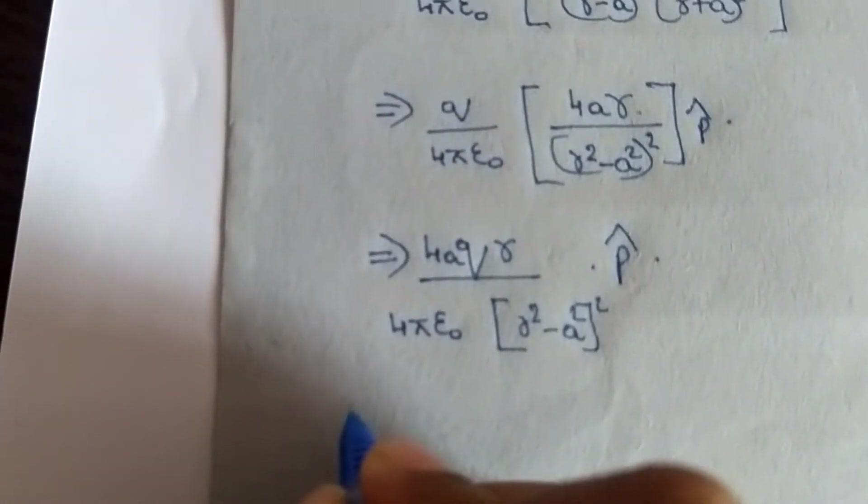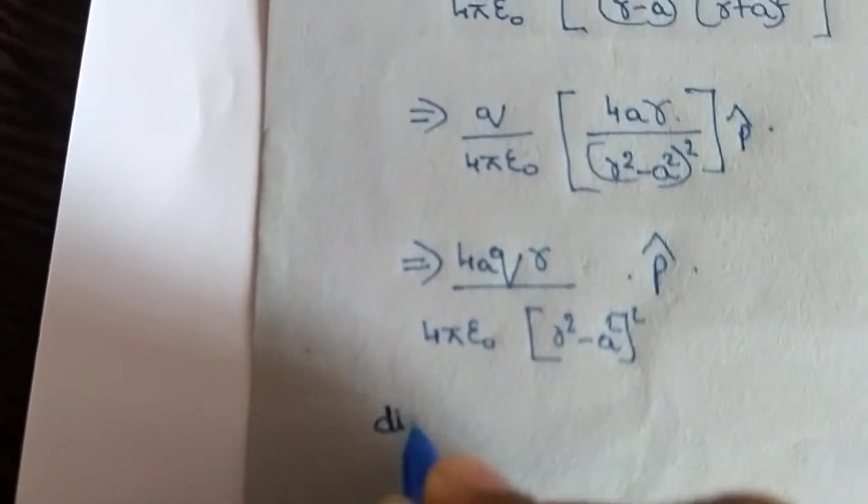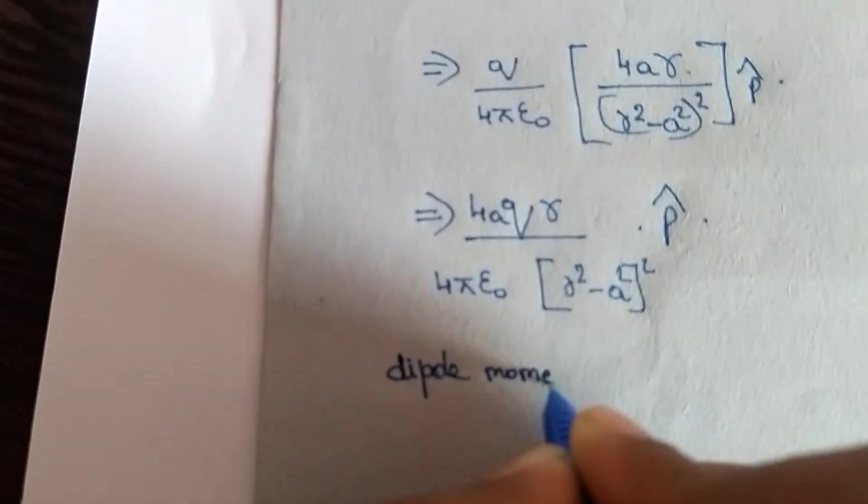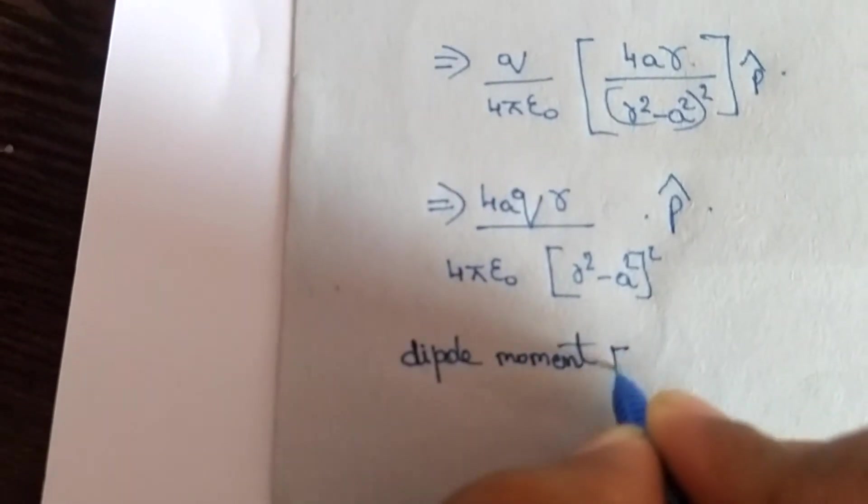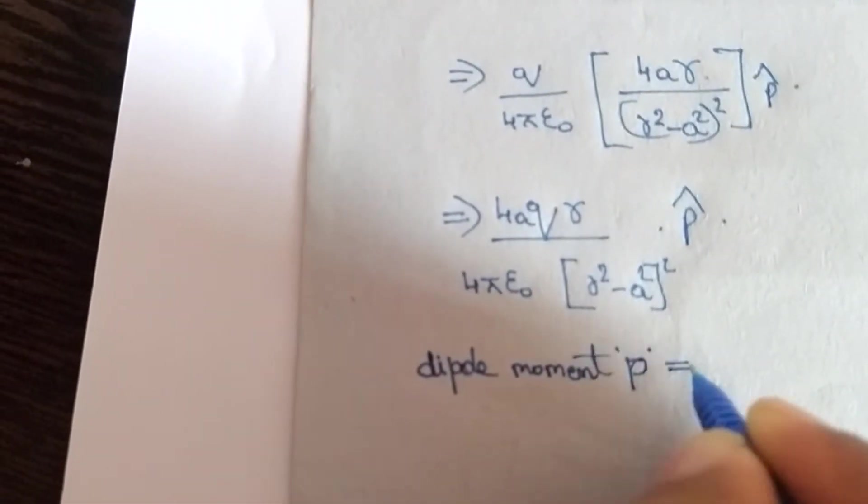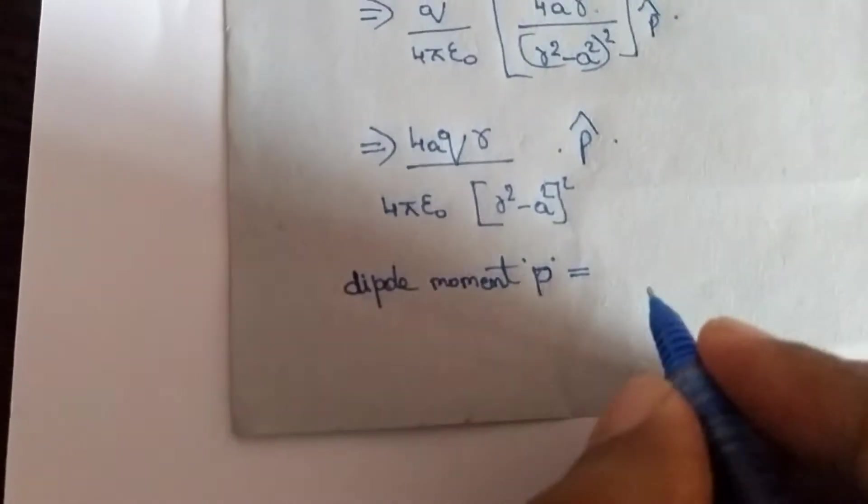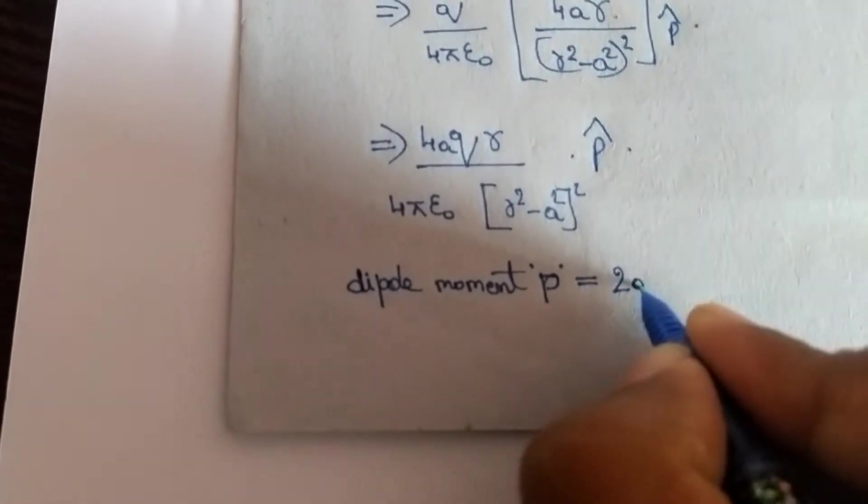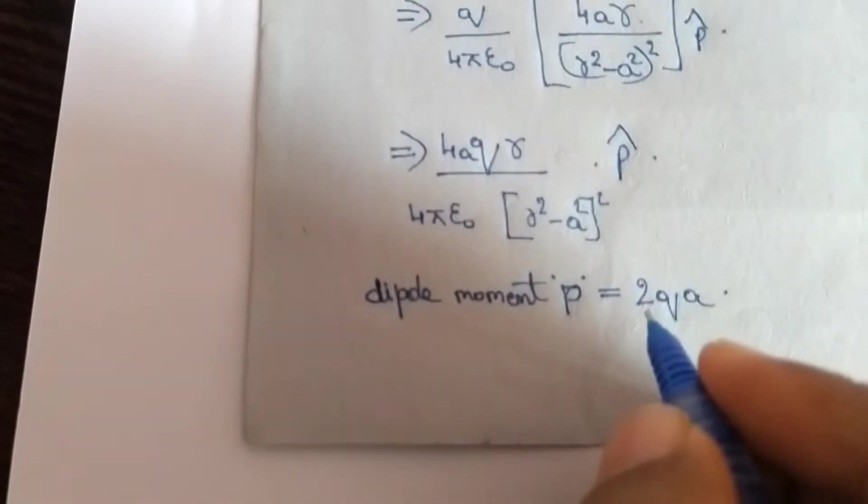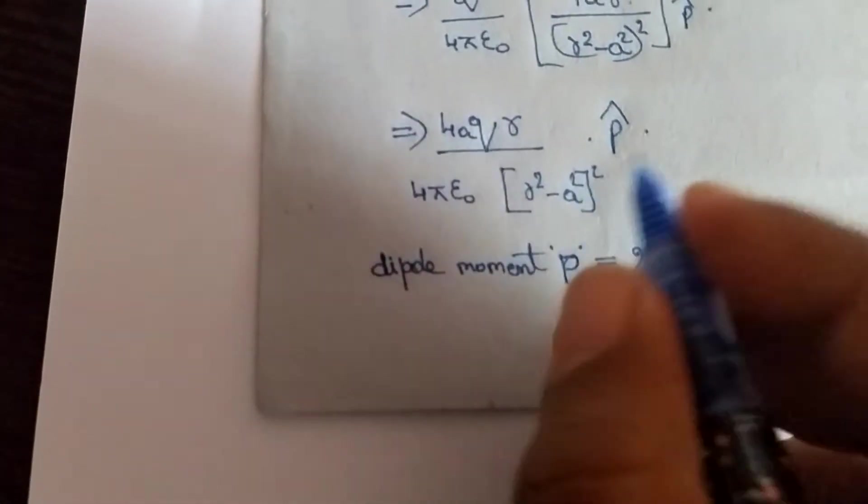We know that dipole moment p is equal to 2Qa. From the upper expression, we can write it here.